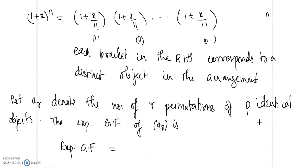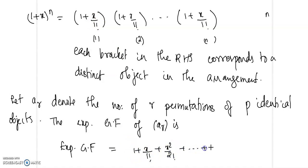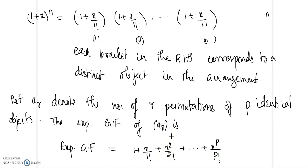P identical objects can be chosen 0 times, 1 time, up to a maximum of P times. So the generating function is 1 plus x/1! plus x²/2! up to x^P divided by P factorial. To find the number of 1-permutations, you take the coefficient of x/1!. Since all identical objects can only be arranged in one way, the coefficient is 1.